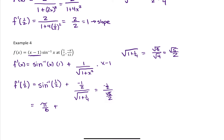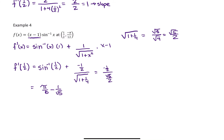Simplifying, that gives us pi over 6 minus 1 over the square root of 5. So this is our slope — it looks ugly, but that is our slope. When we write the equation of our line, we have y minus negative pi over 12 equals the slope, which is pi over 6 minus 1 over the square root of 5, times x minus one-half.